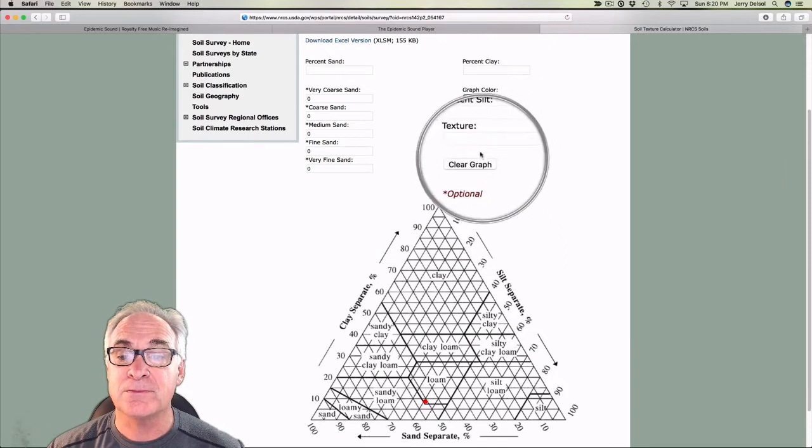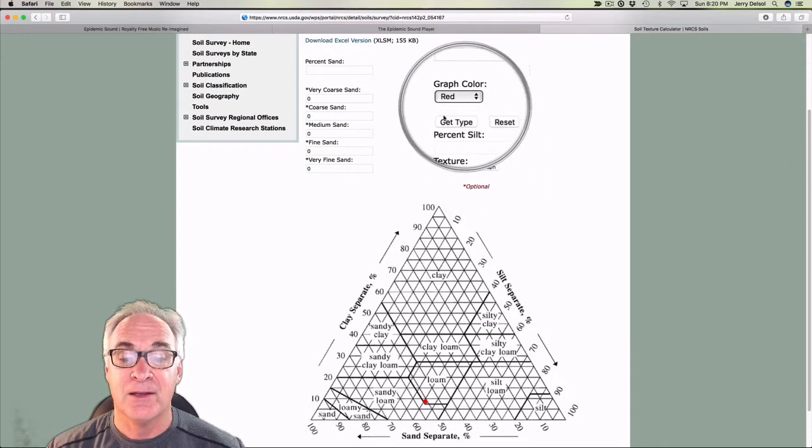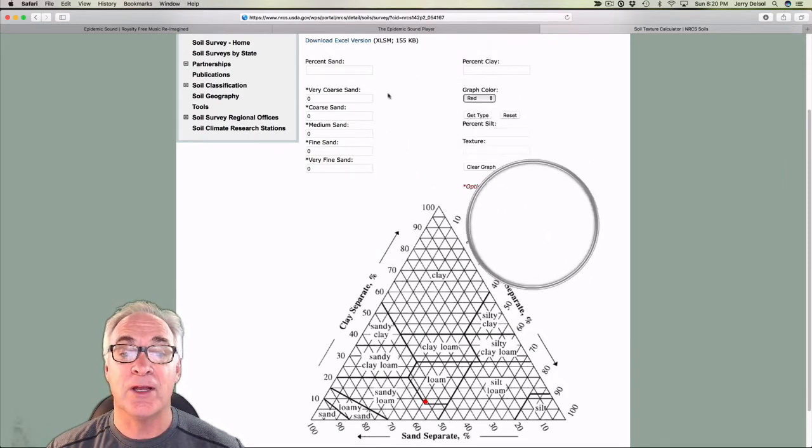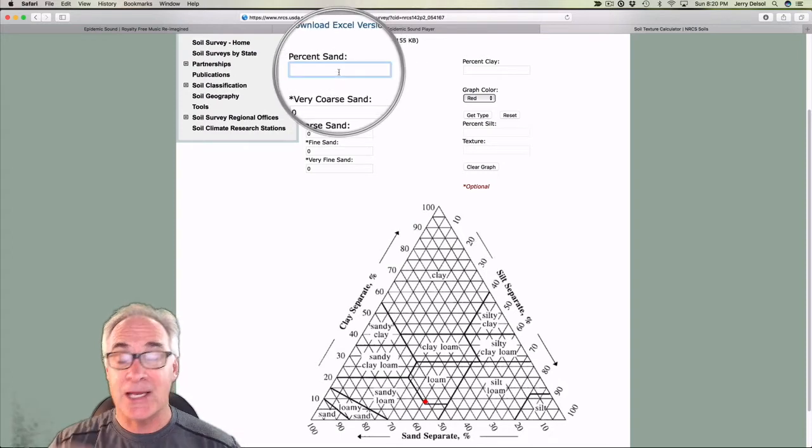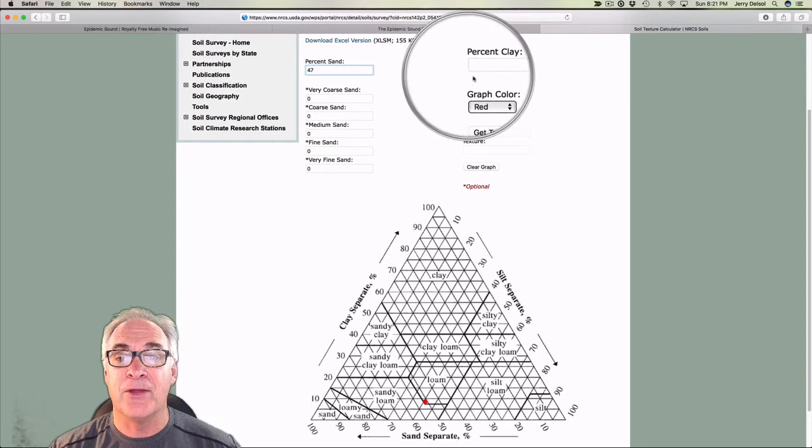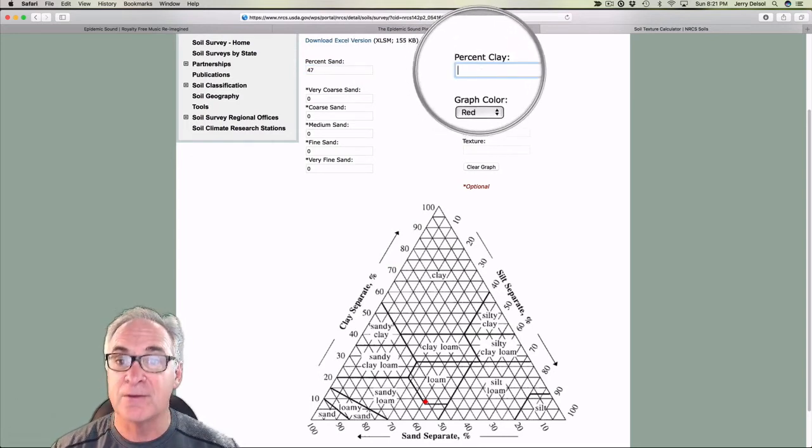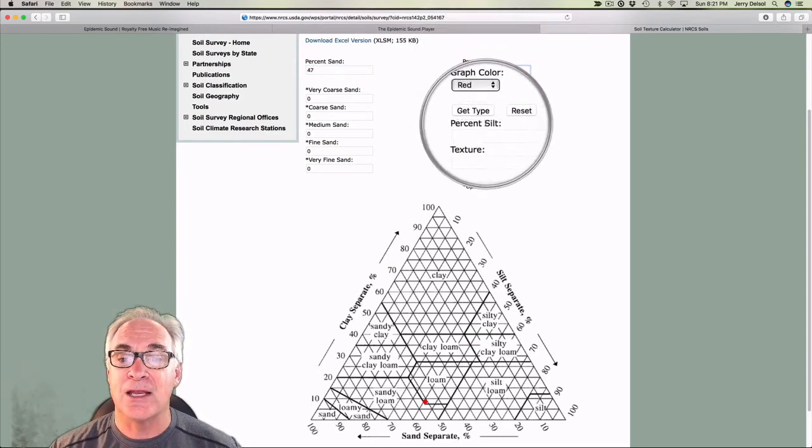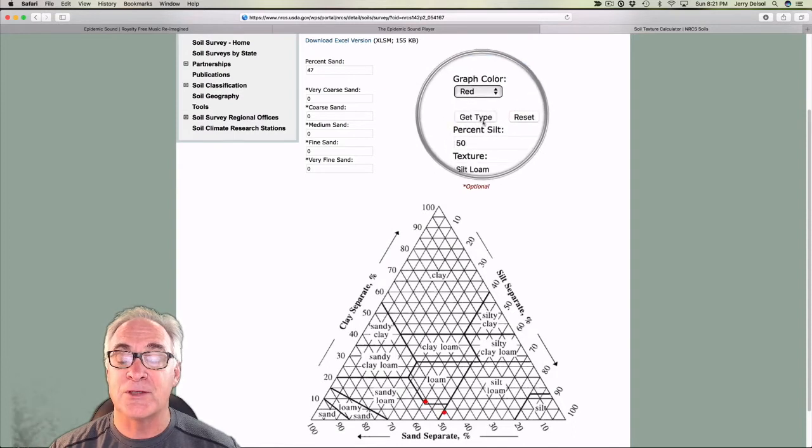Let's have a sand of 47% and then let's say clay is 3%. And then let's get the type. This is going to be 50%.